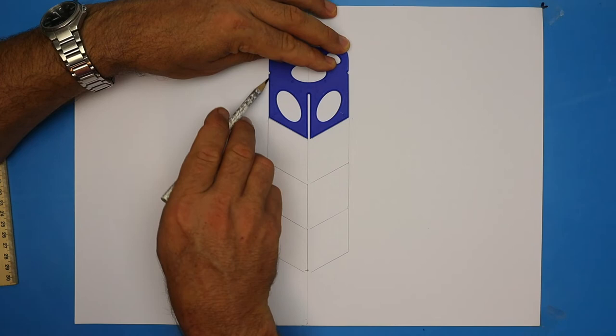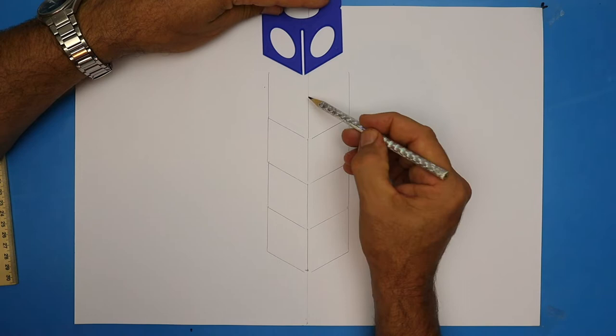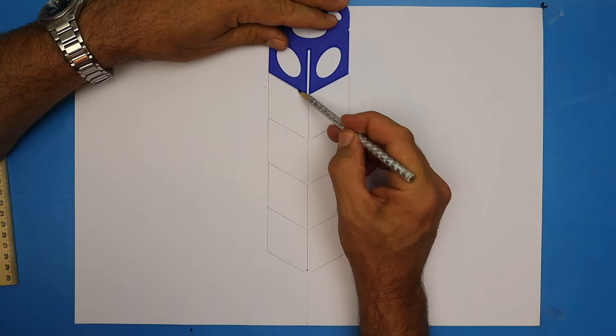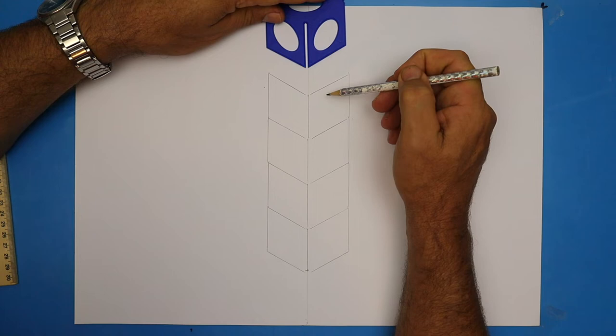And one more cube will give us a tower which is four cubes high. Remember, these are just guidelines. It's okay if they're a little wobbly at this stage. We get to fix them up with a ruler later on, so just keep pushing on. Now at the top, I'm only tracing two lines.